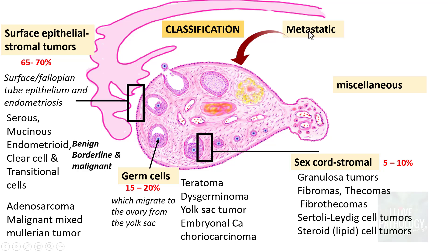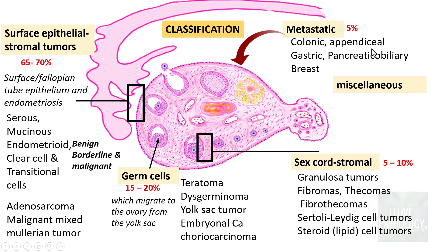Metastatic tumors account for around 5% of ovarian malignancies. Many primary tumors can metastasize to the ovary, including those from the colon, appendix, stomach — gastric metastases are called Krukenberg tumors — pancreaticobiliary apparatus, and breast carcinomas.